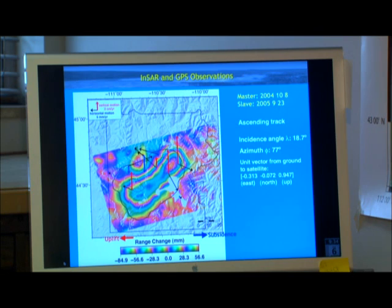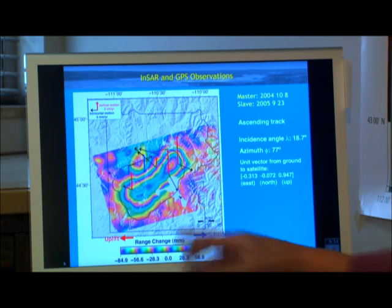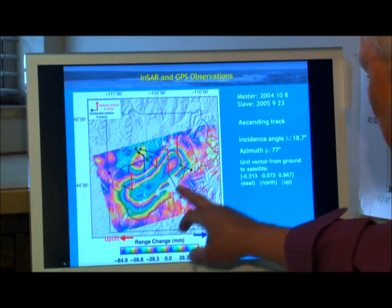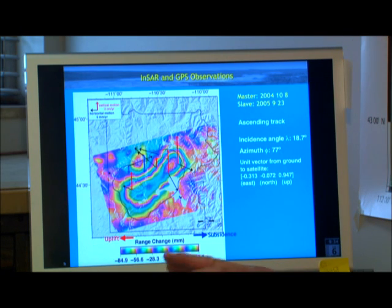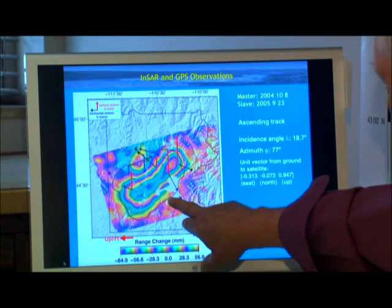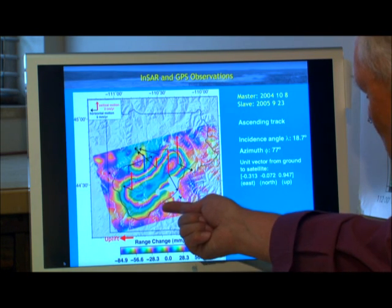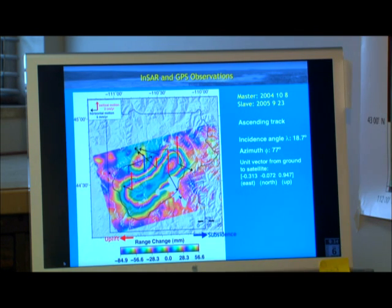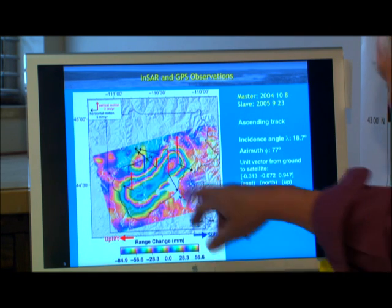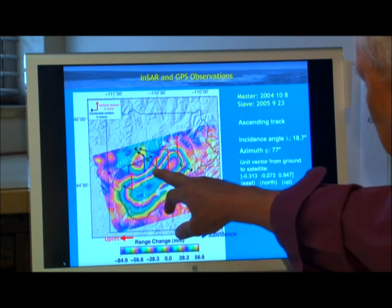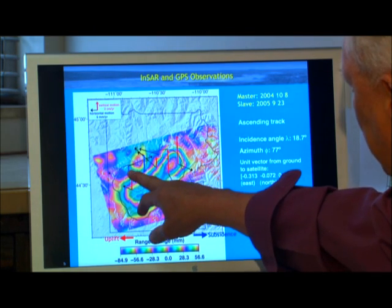We superimposed a satellite radar image shown by the rainbow color patterns, which are individual patterns of changes in elevation of about three centimeters per year. Here are the uplift arrows from the GPS measurements.